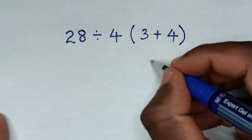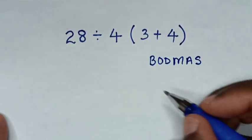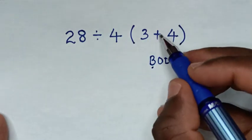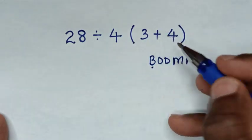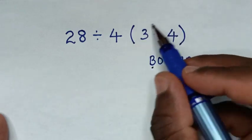So we write the rule BODMAS. Whereas B is bracket, in here we have bracket and operation inside the bracket it is addition. So leave this addition first because it is the first operation inside the bracket.